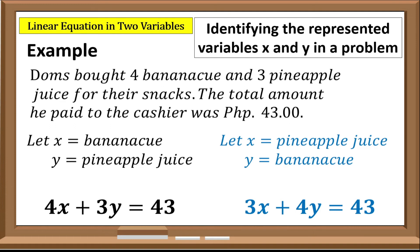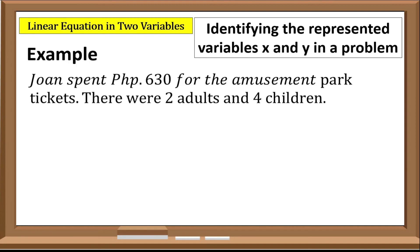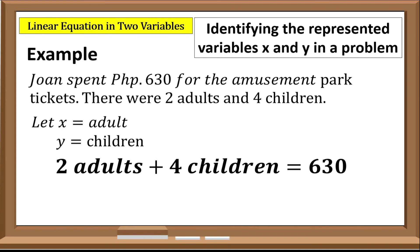Now let us try example two. Joanne spent 630 pesos for amusement park tickets — there were two adults and four children. If we let x represent adults and y represent children, then 2 adults plus 4 children equals 630, giving us the equation 2x plus 4y equals 630.